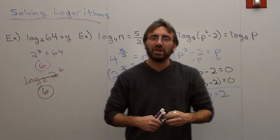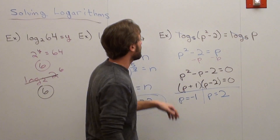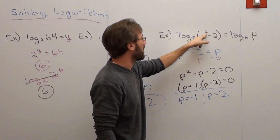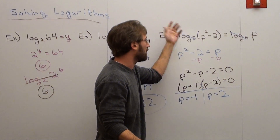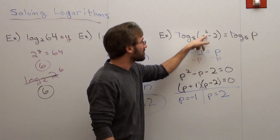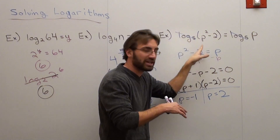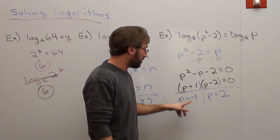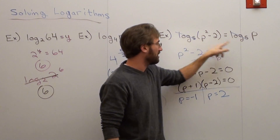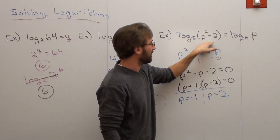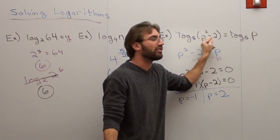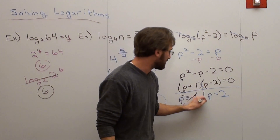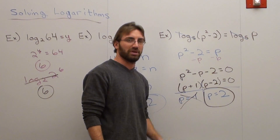Now you have to check the answers — the x value has to be greater than 0, it can't be negative. If I plug in 2: 2 squared minus 2 equals 4 minus 2 equals 2. Checks out — x is greater than 0. If I plug in negative 1: negative 1 squared is 1 minus 2 is negative 1. They're equivalent, but the value can't be negative here — that's your input value. So this solution is extraneous. p equals 2 is the solution that works; p equals negative 1 is not a solution.